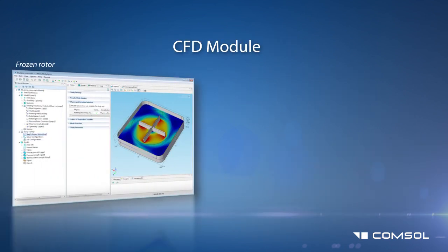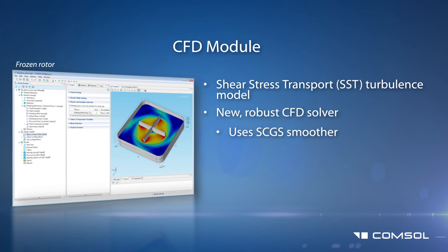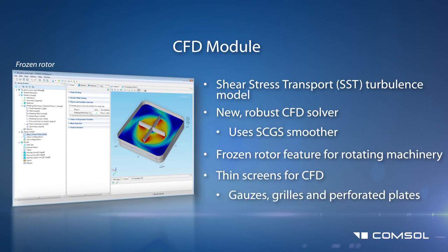More functionality has been added to the CFD module through a new turbulence model: the shear stress transport (SST) turbulence model. Augmented by a more robust CFD solver, the SST model blends the advantages of the K-Epsilon and K-Omega turbulence models and does not require wall functions. Further additions include a frozen rotor feature to simulate rotating machinery and a new feature to ease the simulation of thin screens such as gauzes, grills, and perforated plates.